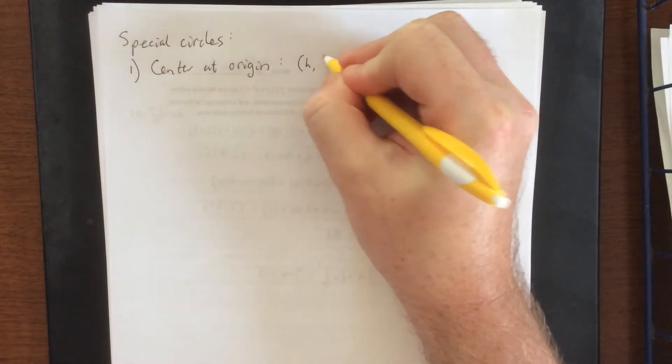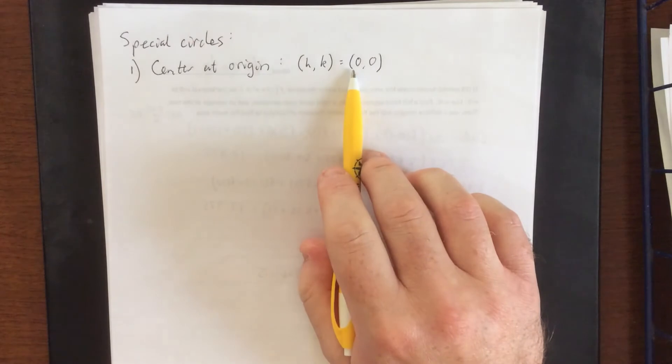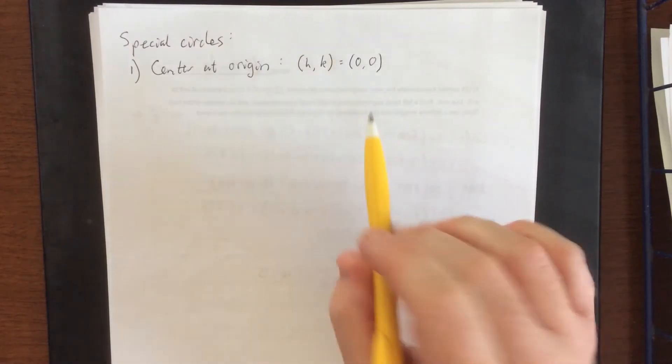Now when I say center is at the origin I mean that that ordered pair h,k that I referred to earlier is actually the ordered pair (0,0). So we would wind up with an x minus 0 quantity squared and a y minus 0 quantity squared.